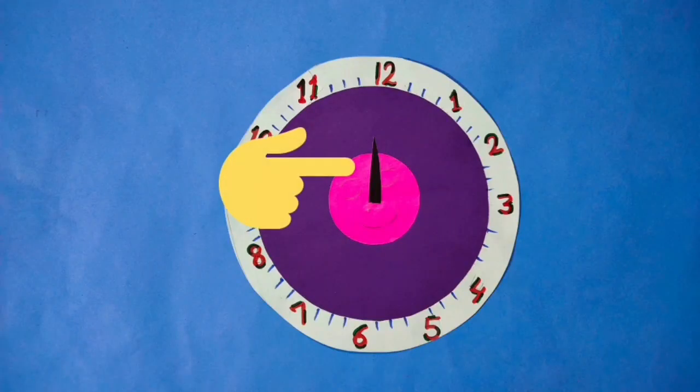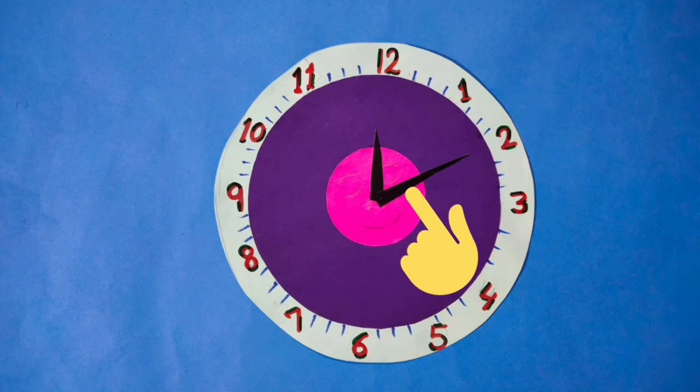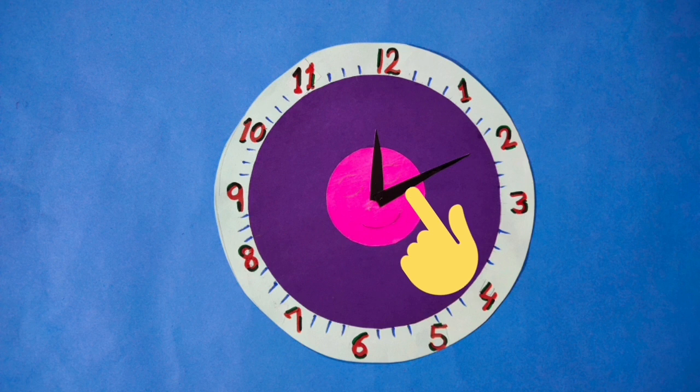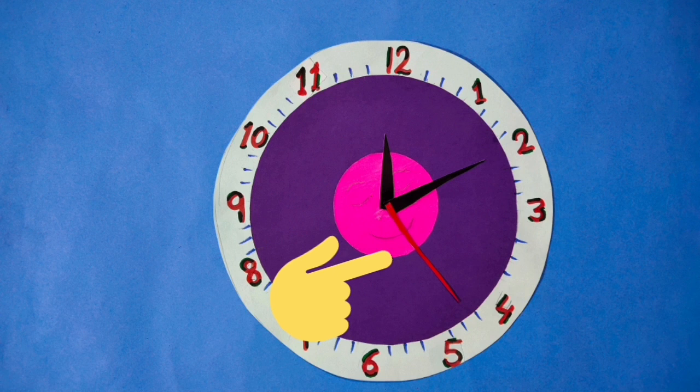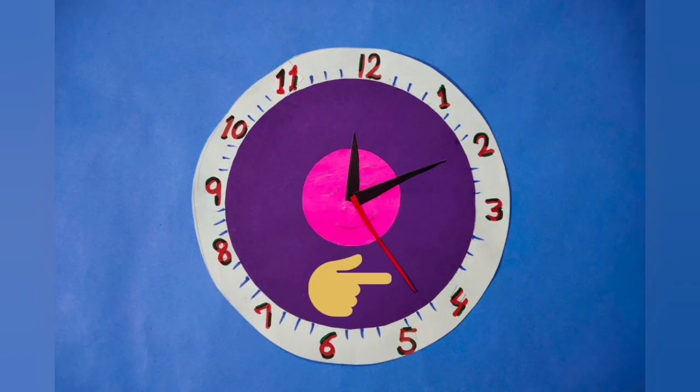It is the hour hand, small and thick, which moves slowly and tells us about hours. It is the minute hand, which is longer than the hour hand and moves faster than the hour hand. And it is the seconds hand, which is thin and long and it moves fastest among the three hands.